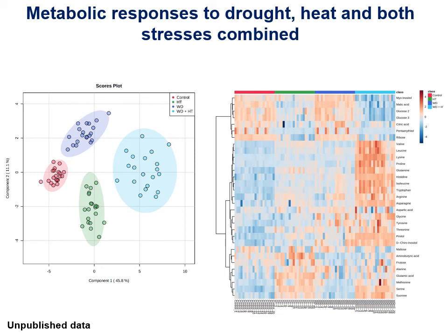Every point here is one biological replicate composed of many metabolites. On the right, you can see a heat map of all conditions: control in red, heat stress in green, water deficit in dark blue, and water deficit plus heat stress in light blue. You can see that in the water deficit plus heat stress condition, many compounds show much greater accumulation compared to the other conditions.